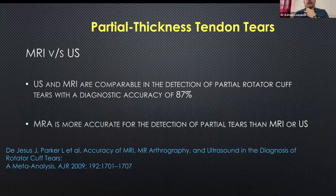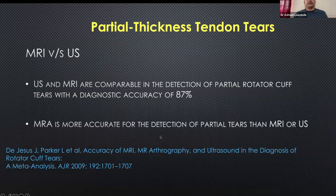Ultrasound and MR are almost comparable in detection of partial thickness rotator cuff tears. MRA is obviously more accurate, but nowadays nobody does MRA just for detection of tears.